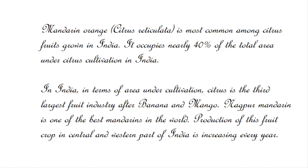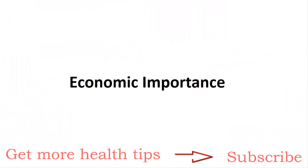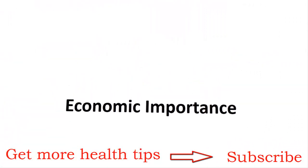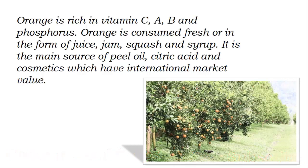Nagpur Mandarin is one of the best mandarins in the world. Production of this fruit crop in the central and western part of India is increasing every year. Orange is rich in vitamins C, A, B and phosphorus. It is consumed fresh or in the form of juice, jam, squash and syrup. It is also the main source of peel oil, citric acid and cosmetics, which have international market value.